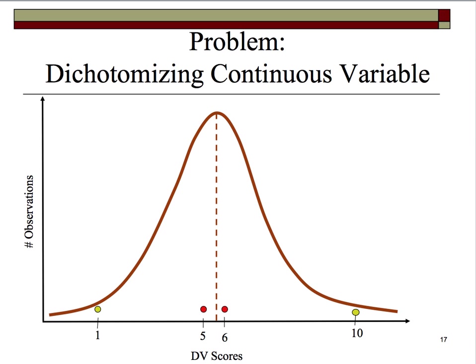Here's a typical normal distribution with lots of scores near the middle accumulated underneath the bell curve, evenly distributed. The dashed vertical line in the middle is the mean, median, and mode. If you dichotomize continuous variables, you're treating observations with a score of 1 similar to observations with a score of 5, and suggesting that a score of 5 is very different from a score of 6 — it's not.